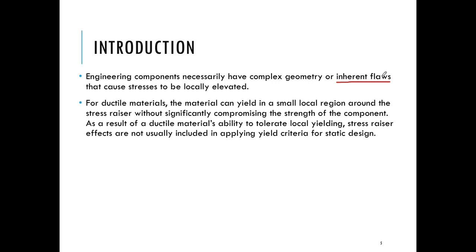For ductile materials, the material can actually yield wherever these cracks are, such that the strength of the entire component does not get significantly compromised. Therefore when we're looking at the failure of ductile materials we don't actually need to consider the effect of these flaws. You may recall that when we looked at the Tresca and von Mises yield criteria, we did not include these flaws in our discussion at all.